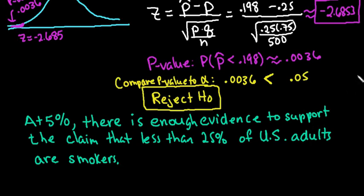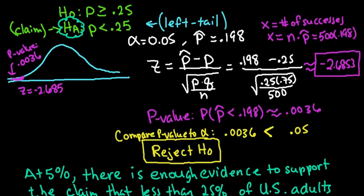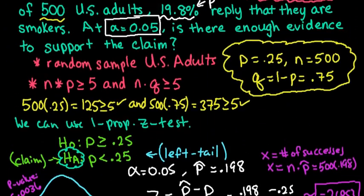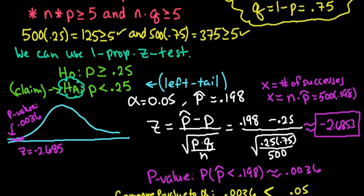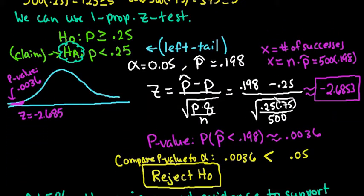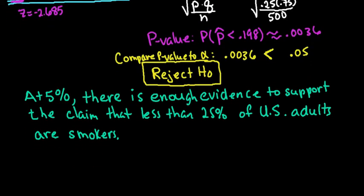All right, just a quick recap. Remember when you are doing hypothesis tests, majority of the time, your professors or teachers are going to require you to actually show out the work, so make sure you get in the habit of checking conditions, naming the test, setting up your null and your alternative, showing the work for the standardized test statistic, and then either finding the p-value or the rejection region in order to help you make your decision. Once you have made your decision, make sure that you go back and interpret it.